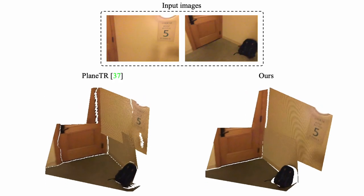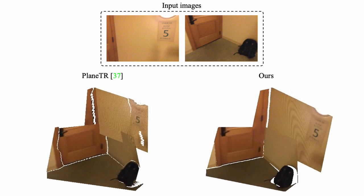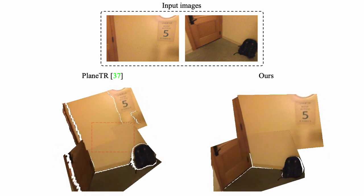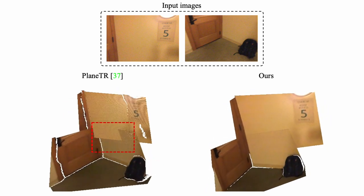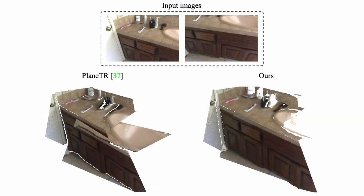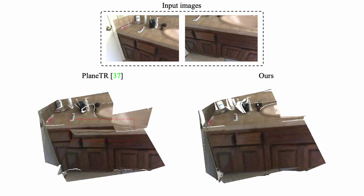Then we will show our planar reconstruction results. Given two sparse input views, our model can generate planar reconstructions in the full extent of the scene. Benefiting from our global plane instance embedding strategy, corresponding planes in different views are naturally aligned geometrically. Compared to the plane TR, which is also trained on the ScanNet dataset, our model shows advantages in reconstruction consistency.